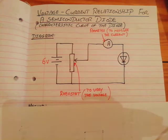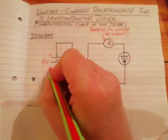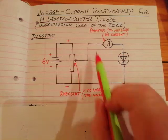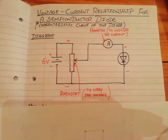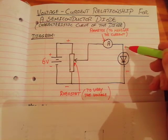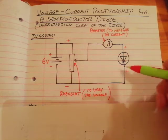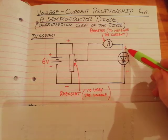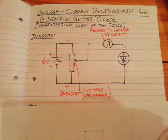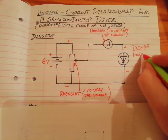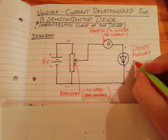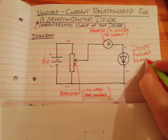Is that diode forward biased or reverse biased? That's the plus of the battery and that's the minus. So up there is plus, down there is minus. This part of the circuit is plus, this part is minus. Will that diode conduct — will current go from plus to minus down through it? Yes, of course it will, because the current goes through the arrow. So this is a diode, and more importantly, it is forward biased.